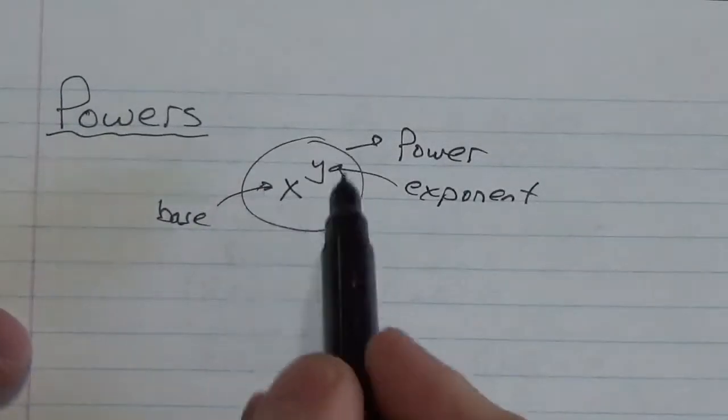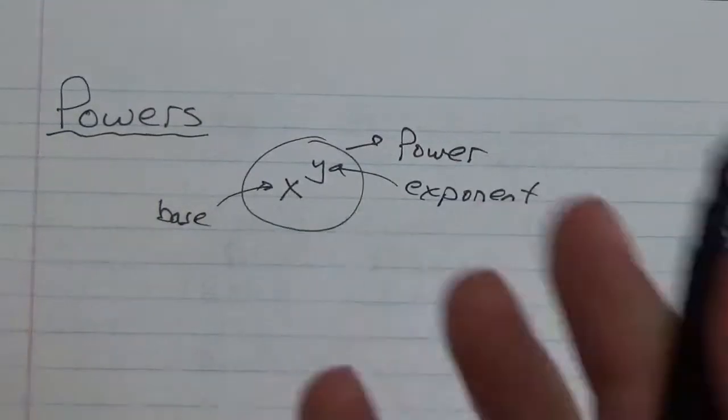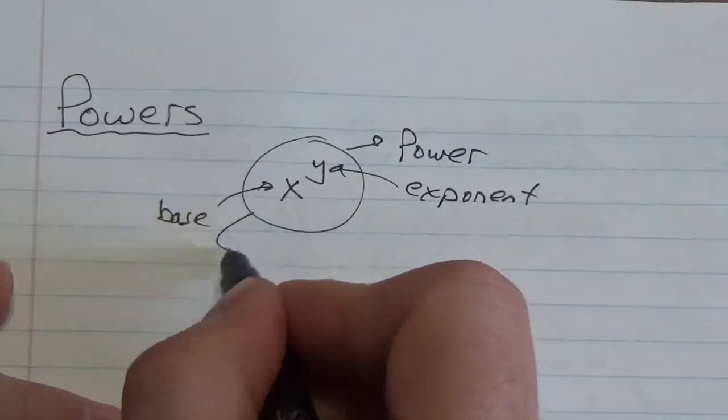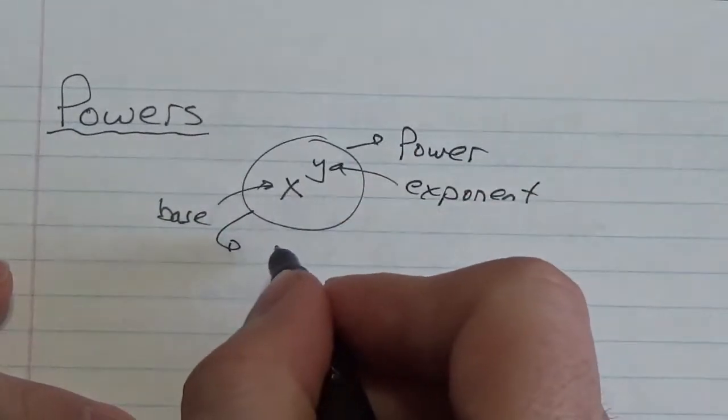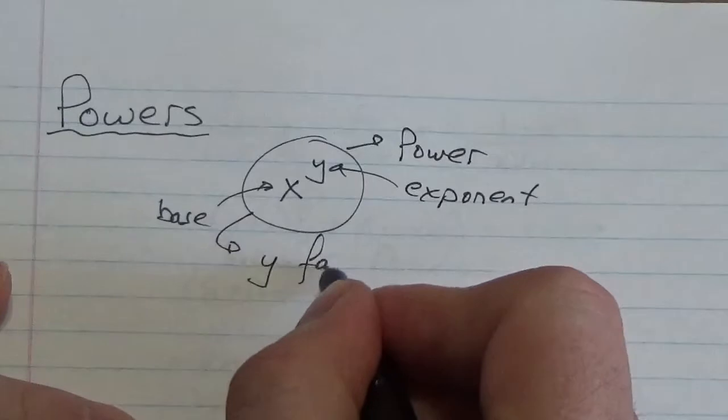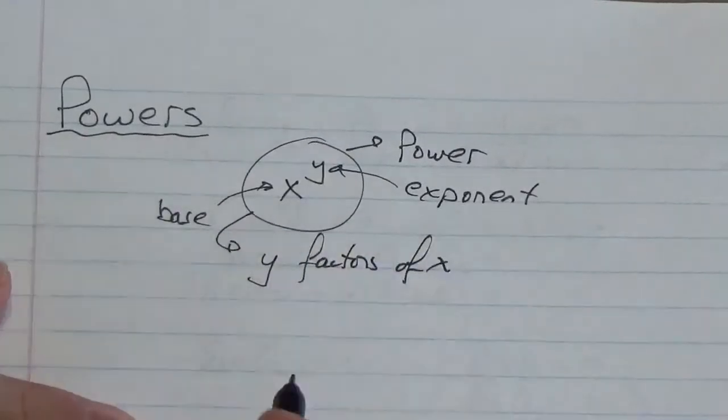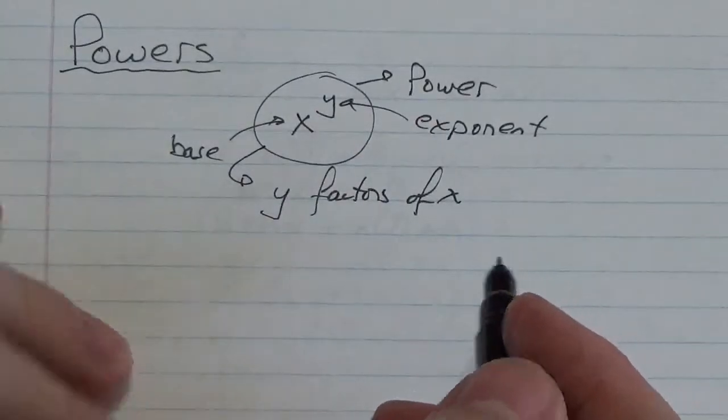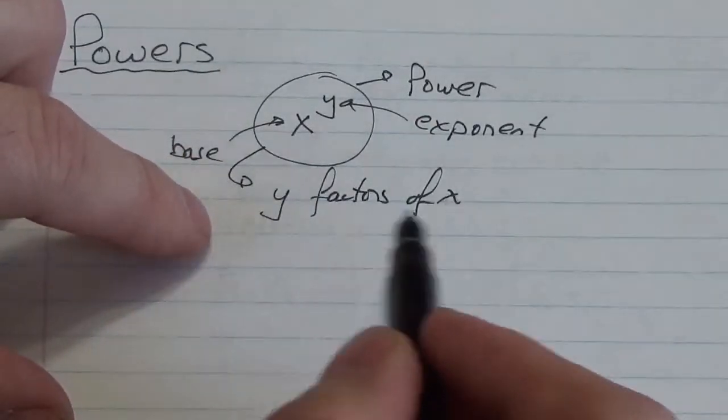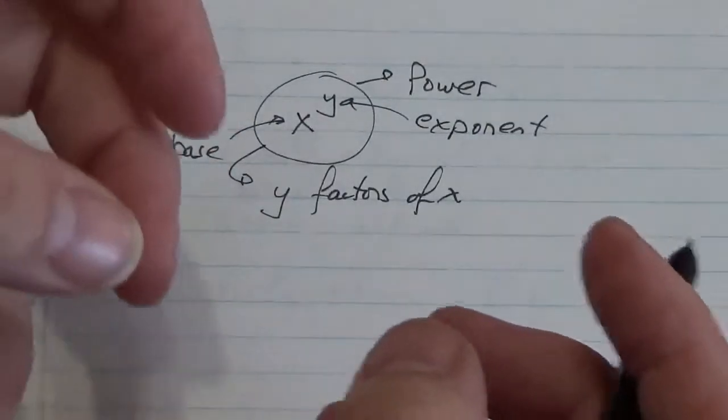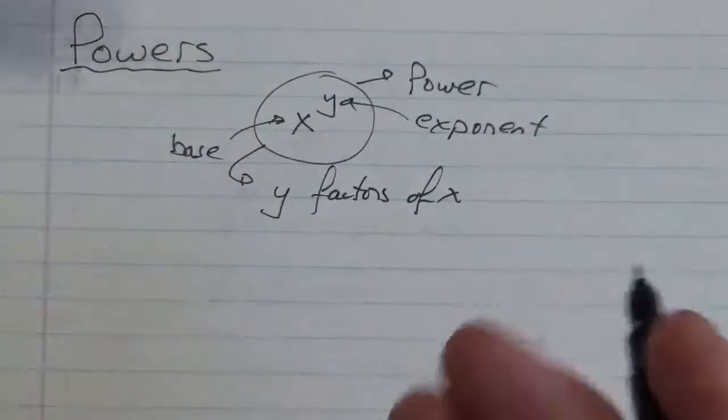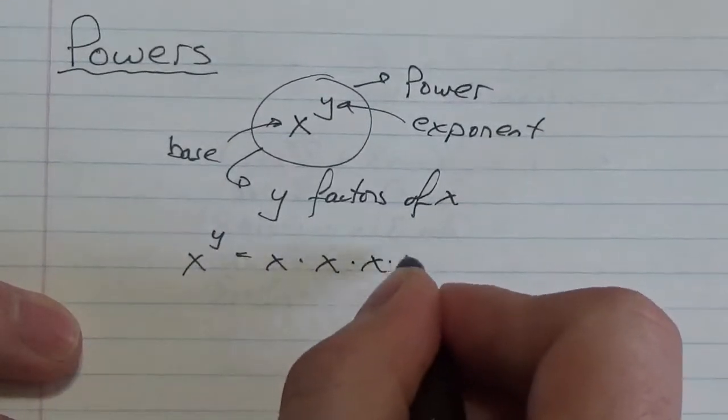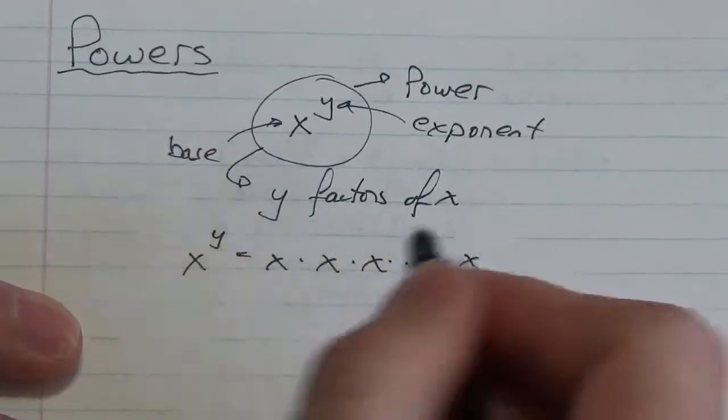But technically speaking, the base with the exponent together, that's considered the power. And what it means here is this thing right here is equivalent to a value that has y factors of x. The word factor means x is a factor - x is being multiplied by something else to get another value. So x to the y means we're gonna have x times x times x, and it goes on and on until we've got y of them.